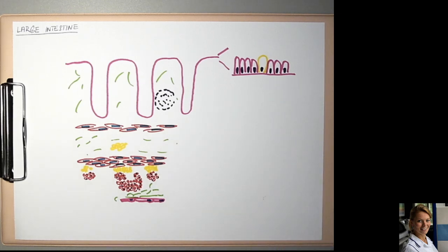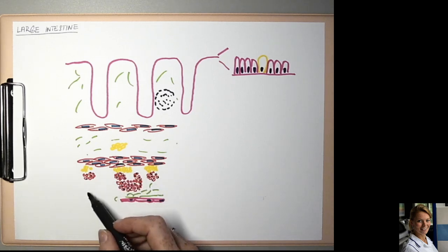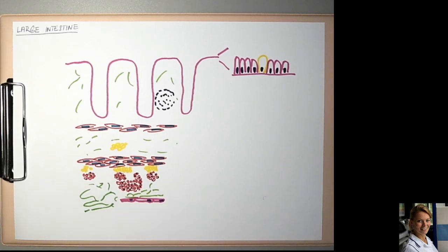Adventitia is loose connective tissue that blends into the surrounding structures. Adventitia covers the retroperitoneal and subperitoneal parts of the large intestine. This means the posterior surface of the ascending and descending colon and the lower part of the rectum.